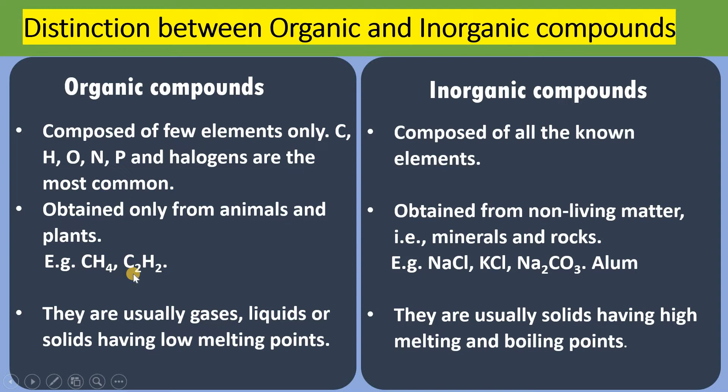Examples of organic compounds are methane, ethene, ethane, propane, butane etc. Examples of inorganic compounds are NaCl, KCl, Na2CO3, K2CO3, alum etc. Organic compounds, due to their weaker forces of attraction, are usually gases, liquids or solids and have low melting points. Whereas inorganic compounds are solids and have high melting and boiling points.